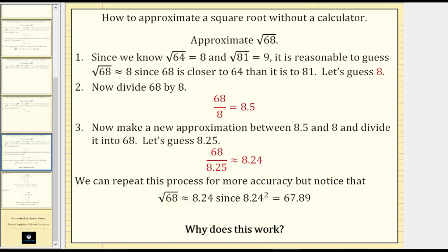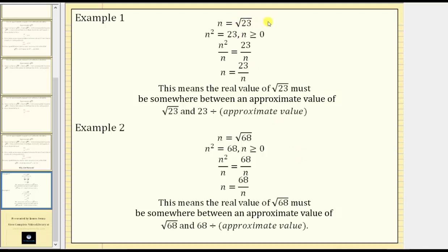Now let's take a look at why this process works. In example one, we were approximating the square root of 23. If we let n equal the exact value of the square root of 23, and then square both sides of the equation, we get n squared equals 23, where n is greater than or equal to zero. If we divide both sides by n and simplify, we end up with n equals 23 divided by n. So if we knew the exact value of the square root of 23, it would also equal this quotient, which means the real value must be somewhere between an approximate value and 23 divided by the approximate value. Similarly, for the square root of 68, the real value must be somewhere between an approximate value and 68 divided by the approximate value. This is the reason why this division algorithm works to approximate square roots.